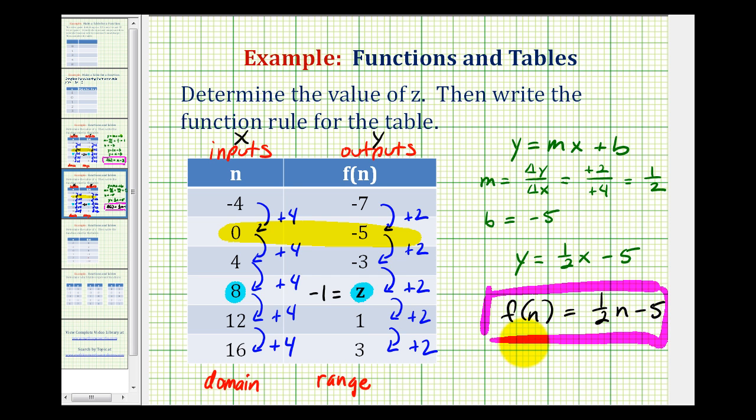And just to verify this, we could evaluate the function at these given inputs to make sure they match the corresponding outputs. So for example, just to check one of these, let's check to make sure that when the input is 12, the output is positive one. So f of 12 would be equal to one-half times 12 minus five. Well, half of 12 is six. Six minus five is equal to one, which is the output in our table.